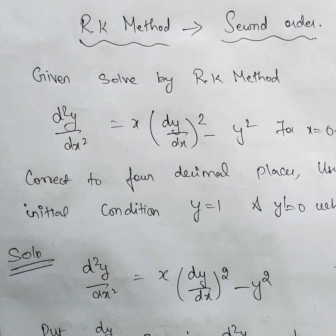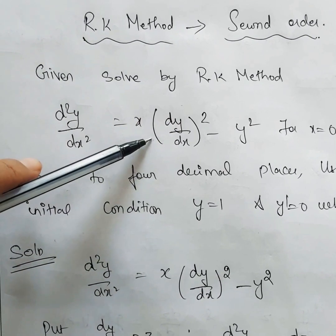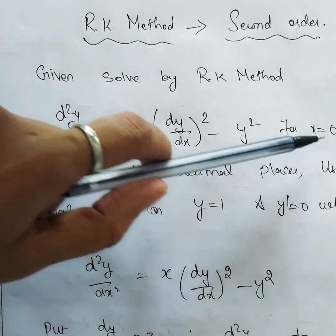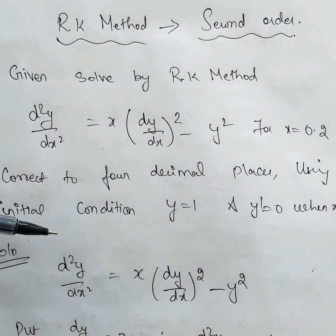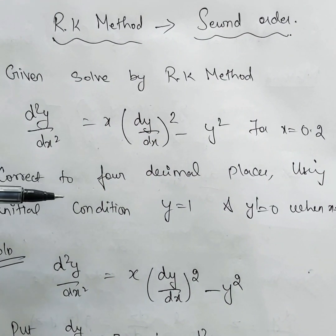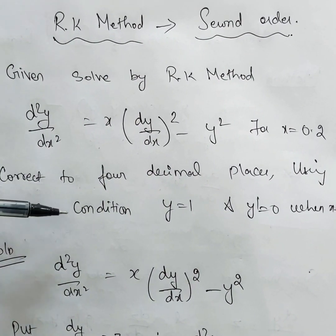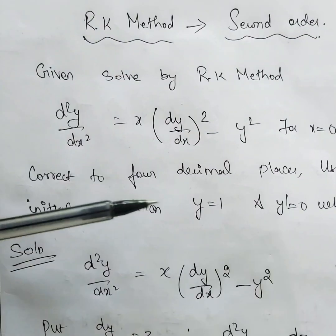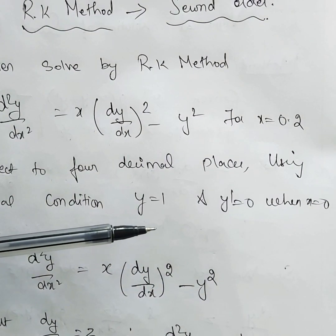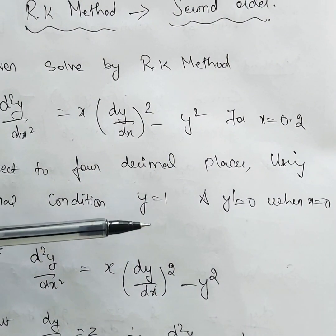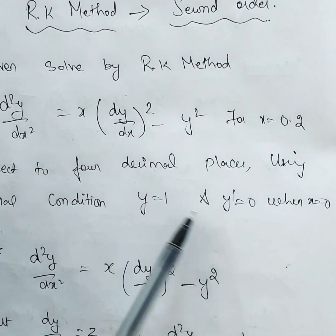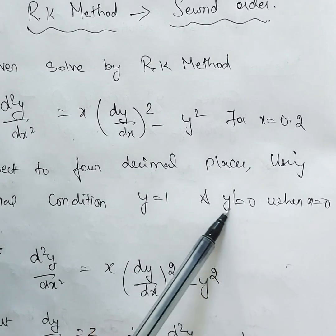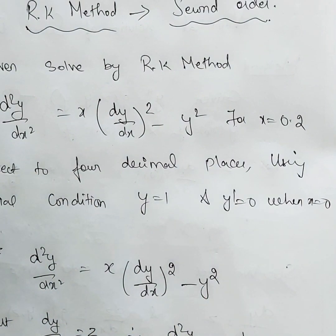Now see this problem: d²y/dx² equals x·(dy/dx)² minus y², find y for x equals 0.2, correct to four decimal places, using the initial conditions y equals 1 and y dash equals 0 when x equals 0. So x-naught is 0, y-naught is 1, and z-naught is 0.